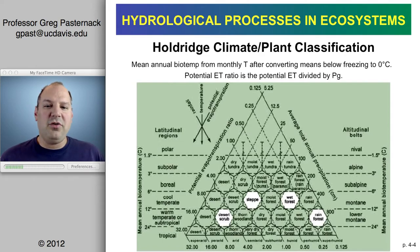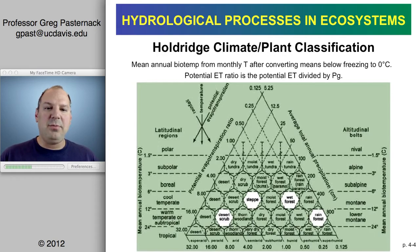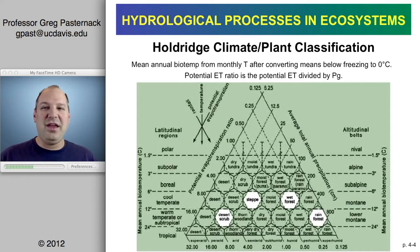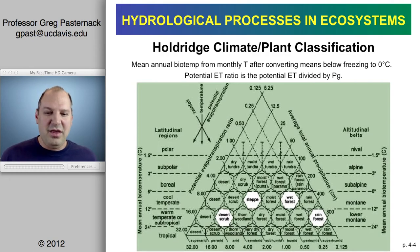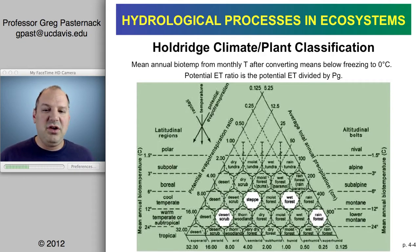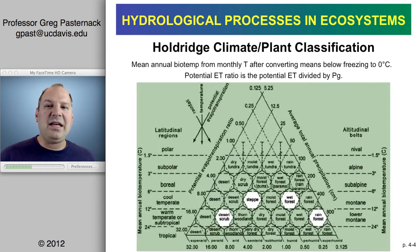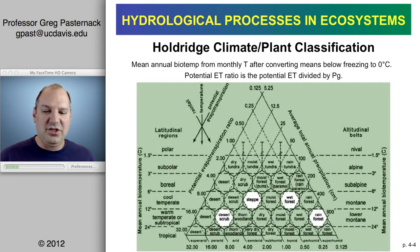Looking at the climate of the Earth as a whole, there was a scientist named Holdridge who came up with a climate-plant classification system summarized in what's called a ternary diagram. If you haven't seen a ternary diagram before, this is a good time to learn it — it's a very powerful tool seen quite a lot in the geosciences. It's a way of showing how multiple variables interact. We often see them in soils, with sand, silt, and clay as the basis for soil texture classification. In this case we have three variables.